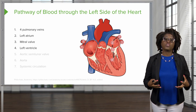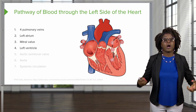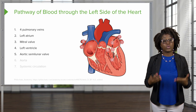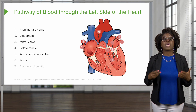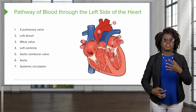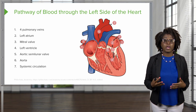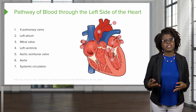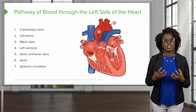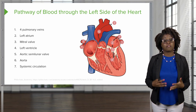When the left ventricle of the heart contracts, the blood will be pumped out by way of the aortic semilunar valve into the aorta, where then it will go through systemic circulation, delivering oxygenated blood to our body's tissues so that our body may be able to use that oxygen to undergo certain metabolic functions.